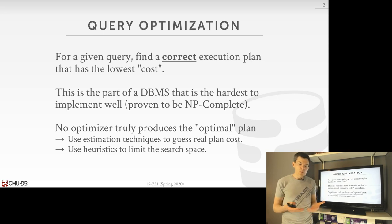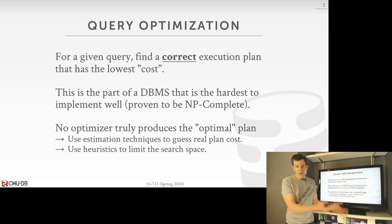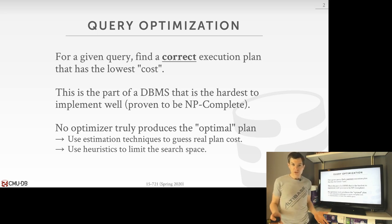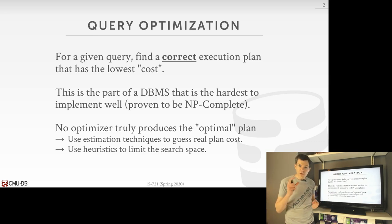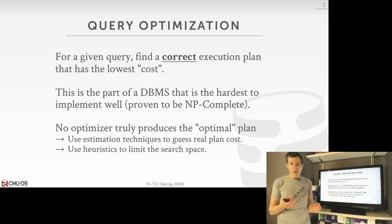If we need to estimate the cost of executing one query plan, we could just execute the query to get the true cost. But if we want to look at thousands of possible different query plans, that's not feasible. So we need a way to estimate it. This cost metric is also an internal measure the database system uses to determine whether one plan is better than another.